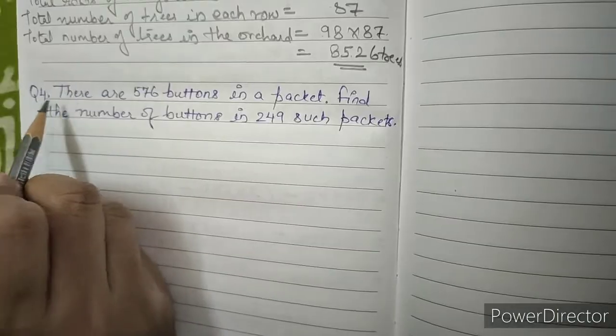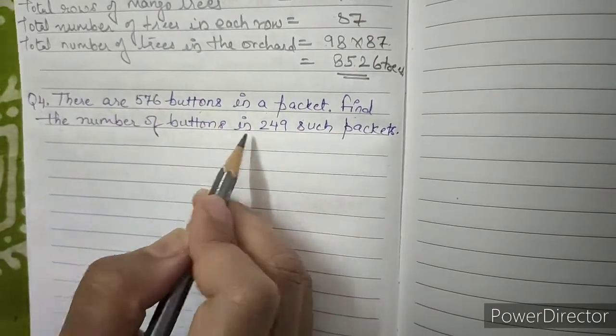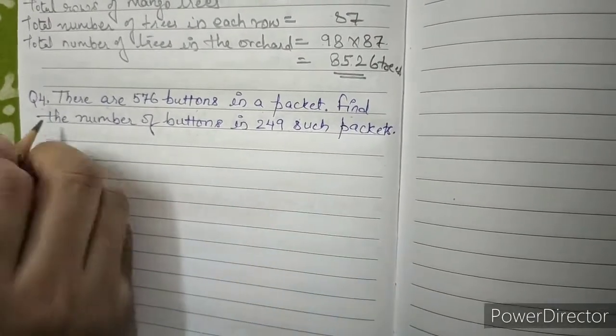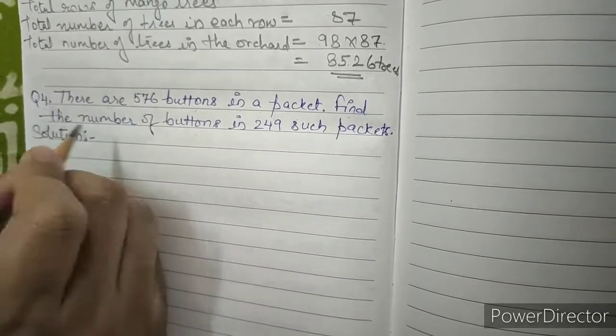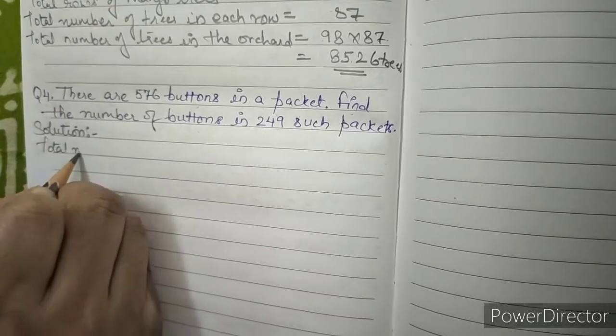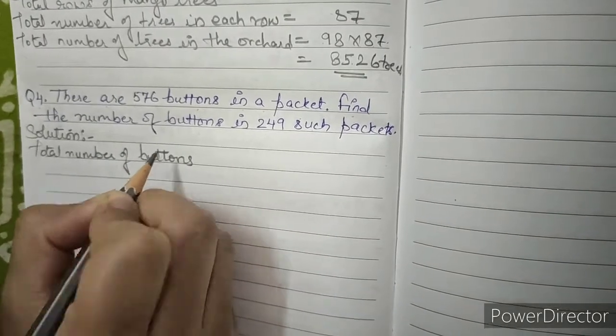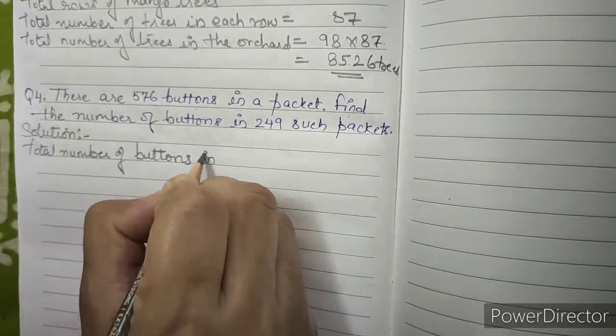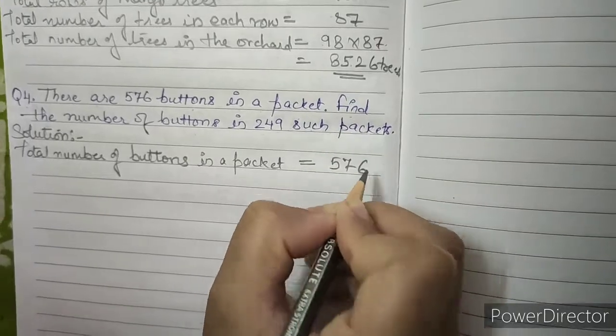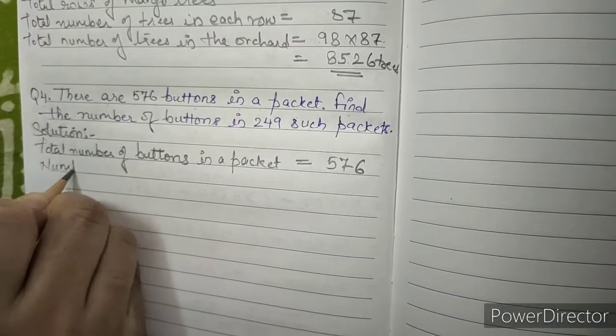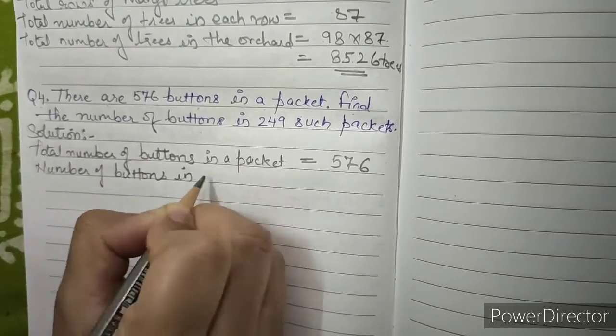Question number 4: There are 576 buttons in a packet. Find the number of buttons in 249 such packets. Solution: Total number of buttons in a packet equals 576. Number of buttons in 249 such packets equals 576 into 249.